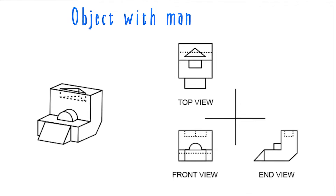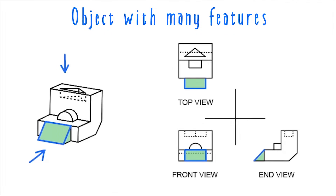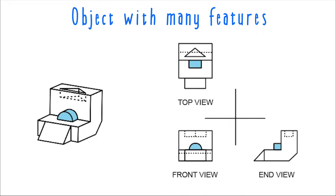Before we get into some top front end example problems, let's do a brief run-through of an object that has a lot of different kinds of features. Notice first that the ramp at the front of this object appears rectangular in both the top view and the front view, because this face is the only thing of that ramp visible from those views. This rounded section appears rectangular in the top view, where it matches the width of the component in the front view, and also appears rectangular in the end view, where it matches the height of the component in the front view.